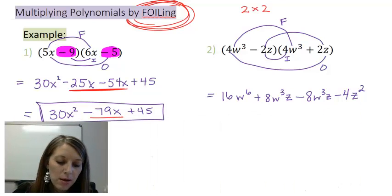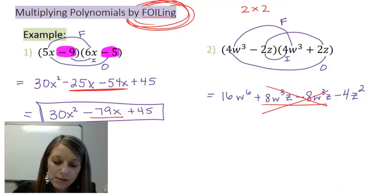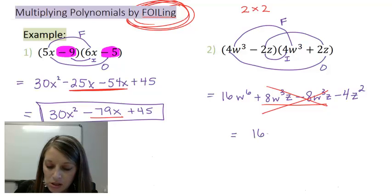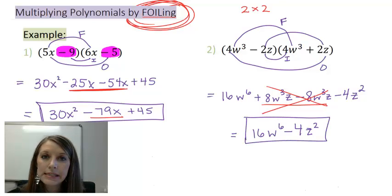Now, if I look at my middle two terms, these are like terms, but these are special because they are exactly the same but opposite signs, which means that these two terms end up canceling each other out. So my final answer of this problem is 16w to the sixth minus 4z squared. And it is in alphabetical or descending order, so that is my final answer.